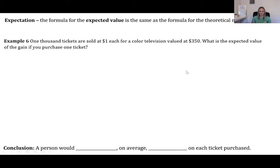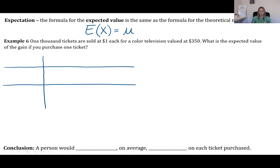Now we talk about expectation. The formula for expected value is the same as the theoretical mean — just that weighted sum Σ x·P(x). The expected value is what you would get if you played a game many, many times — what you could expect in the long run.